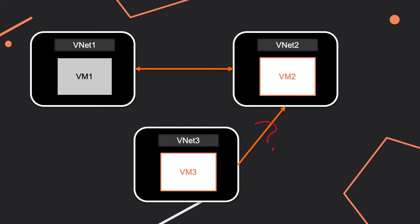Try to remember that for the exam day. Also, if they ask about the connection between VM1 and VM3, since there is no peering connection between vnet 1 and vnet 3, you also cannot connect those virtual machines.